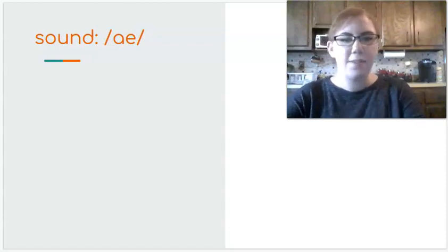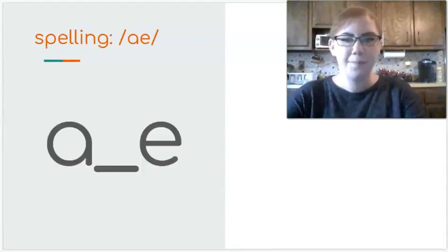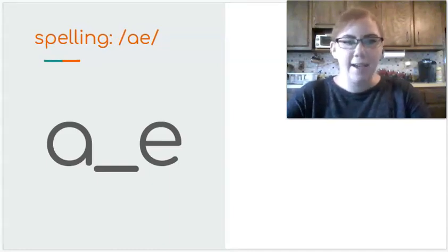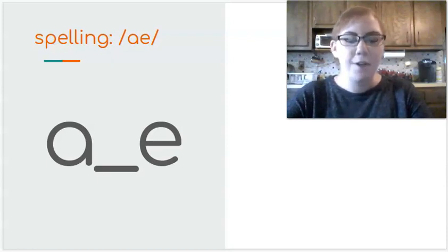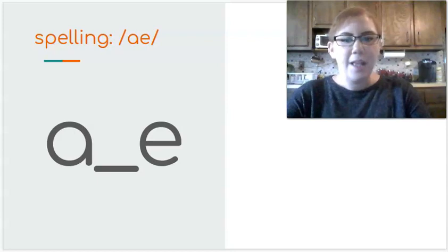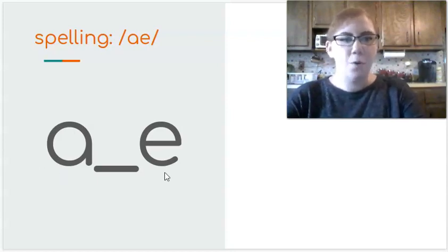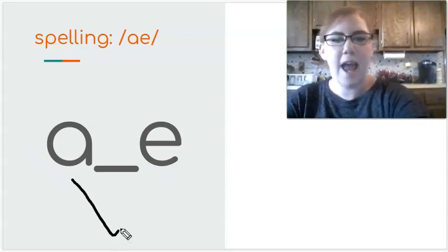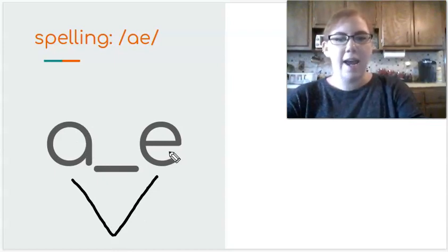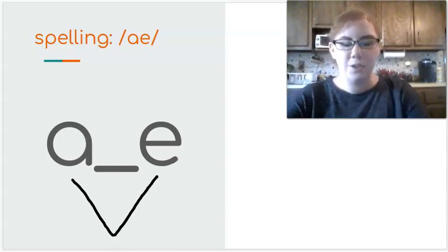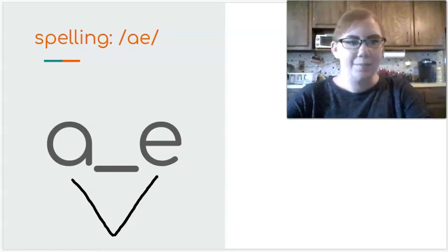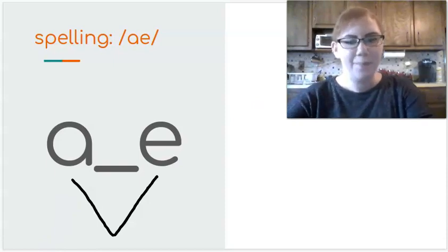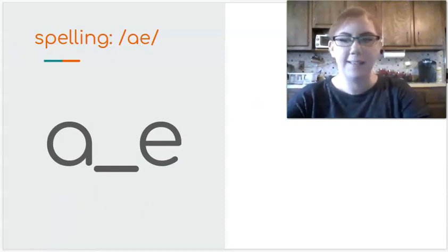We're going to look at how to spell this vowel sound. Here we have A blank E. This is a little different than the other spellings we've looked at so far. These two letters, A and E, work together as a team to make the sound A. We're going to call this a letter team.